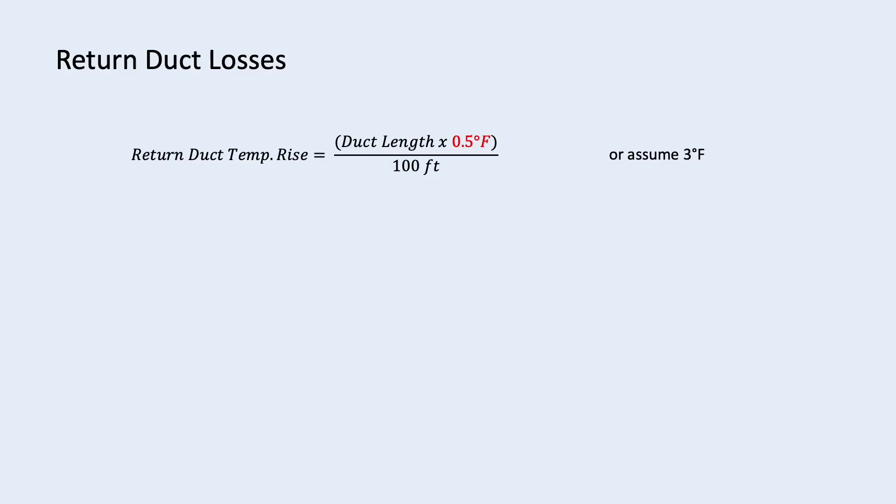To determine the on-coil enthalpy, we first need to consider the return duct temperature rise. The same formula can be used but with a slightly lower temperature rise multiplier. Similarly, we can also assume a 3 degree Fahrenheit temperature rise if the duct length is unknown yet.